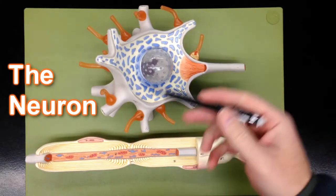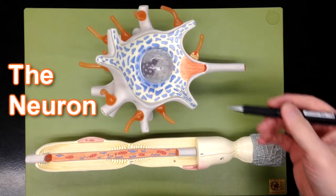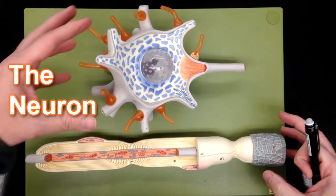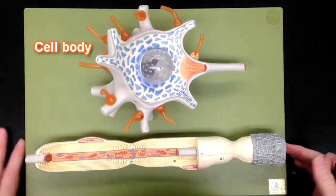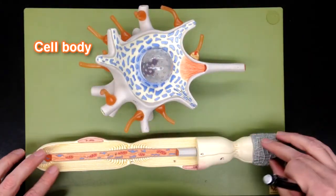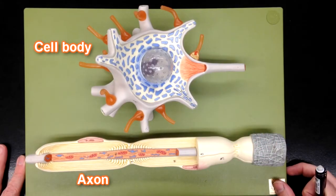This model represents a neuron. The neuron has been cut so we can fit all the pieces on here. This is the cell body right here, and this down here is the axon. I'll talk about the structures individually.